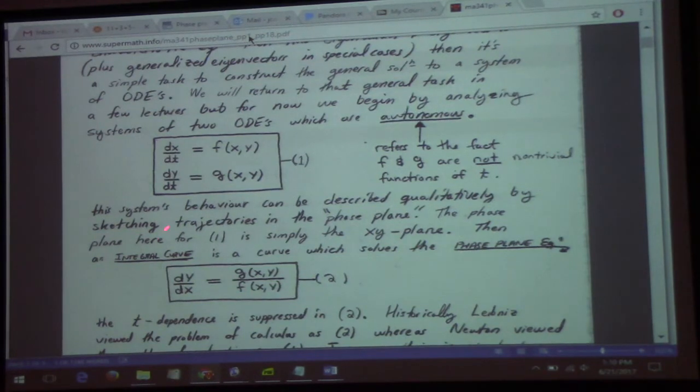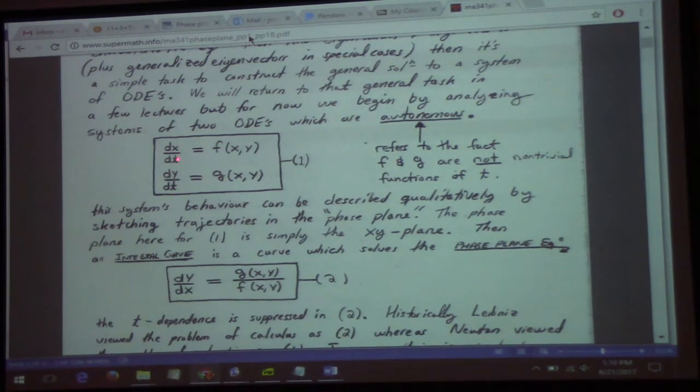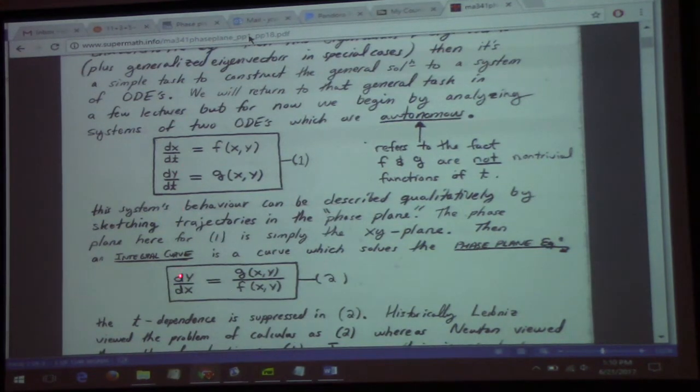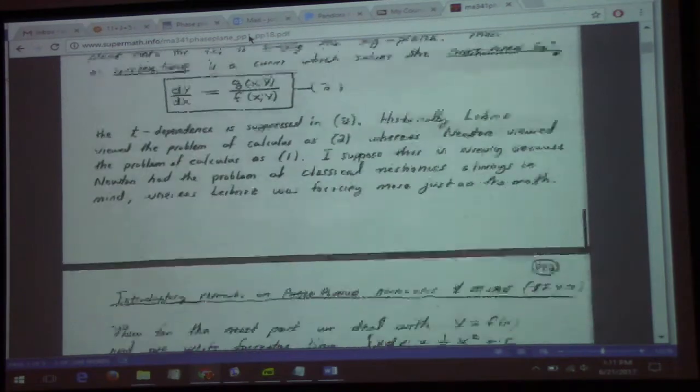Now, one thing you could do to study this is to eliminate time. You could look at dy/dx as being basically dy/dt over dx/dt. We studied parametric calculus. In calculus two, we learned that dy/dx for the parameterization is given by the y derivative divided by the x derivative of the parameterized curve. So you could study autonomous systems by instead studying dy/dx equals g over f. This is sometimes called the phase plane equation. We'll come back to this when we have more time to talk about that more systematically, maybe tomorrow.